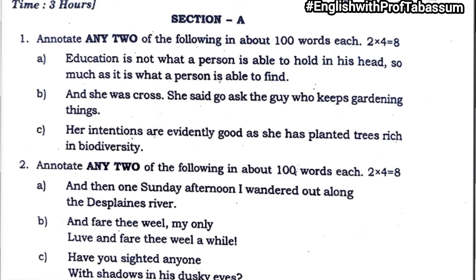Section A: annotate any two of the following in about 100 words each. 'Education is not what a person is able to hold in his head so much as it is what a person is able to find.' This prose annotation is taken from the lesson 'Two Sides of Life.'